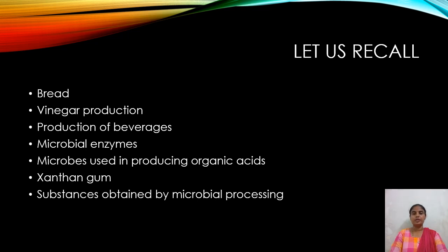Not only bread — vinegar, soy sauce, and monosodium glutamate are also produced by microbial fermentation. Vinegar imparts sour taste to food and acts as a preservative. It is nothing but 4% acetic acid. Bacterial strains like Acetobacter and Gluconobacter are mixed with ethanol so that acetic acid and other products are formed. The acetic acid produced is separated by rectification, then pasteurized, bleached, and a small quantity of sulphur dioxide is added to produce vinegar.